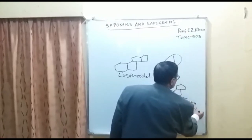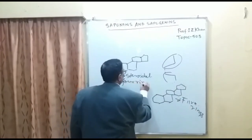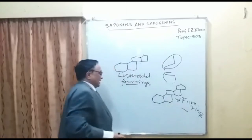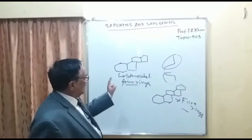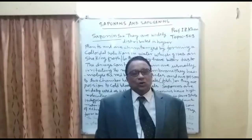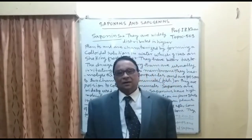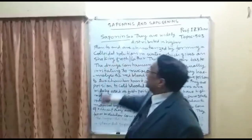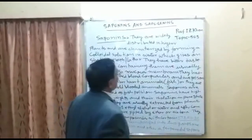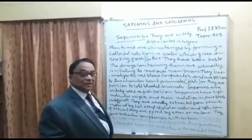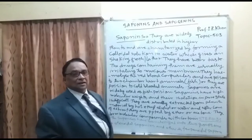So the five-ring nucleus is terpenoidal and the four-ring nucleus is steroidal. As I have told you, saponins are glycosides. Sapogenins are non-glycosides. Saponins are widely distributed in higher plants and are characterized by forming a colloidal solution in water.